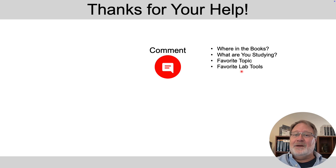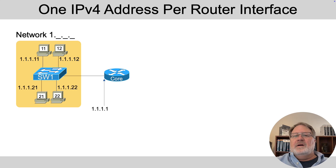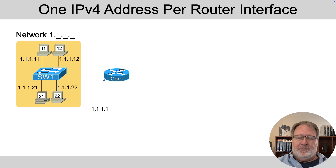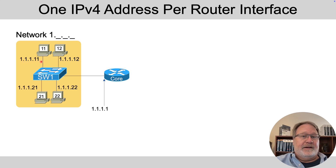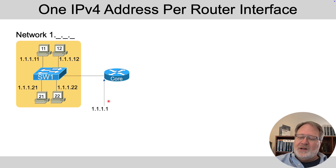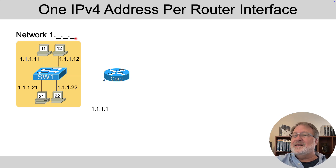Let's jump in and talk about some IPv6 fundamentals. For IPv4, the addresses are dotted decimal numbers — they represent a 32-bit binary number, and the addresses are assigned per interface. PCs with Ethernet NICs will have an IPv4 address assigned, something like 1.1.1.11. And then there'll be a router somewhere connected into that same subnet, and it too will have an IP address in the same subnet or network. All the addresses begin with 1 because they're part of network 1. So it's addressing per interface.